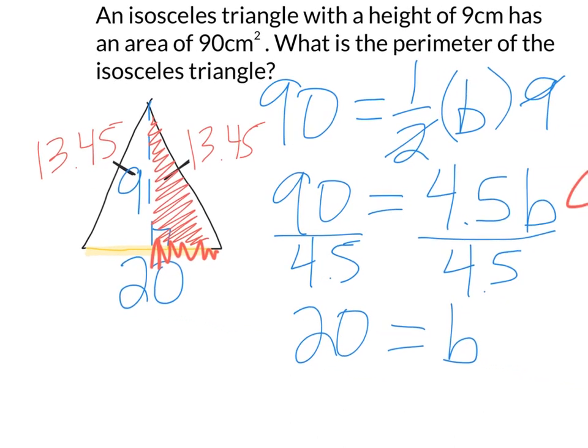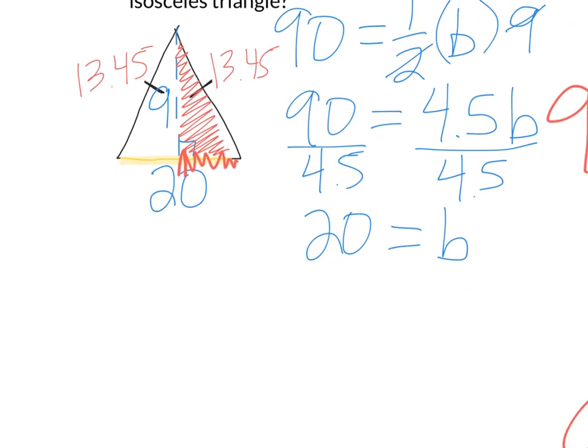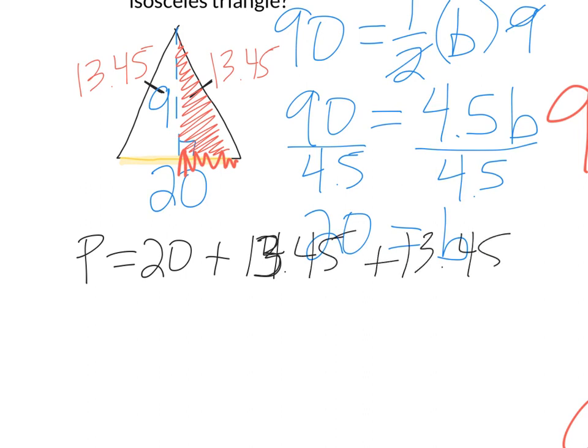So now I can answer the question, what is the perimeter? Perimeter is the sum of the three sides of my triangle. 20 plus 13.45 plus 13.45.